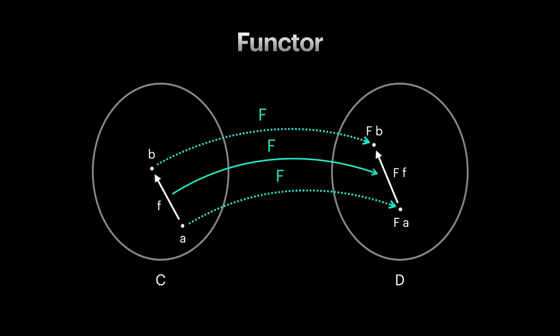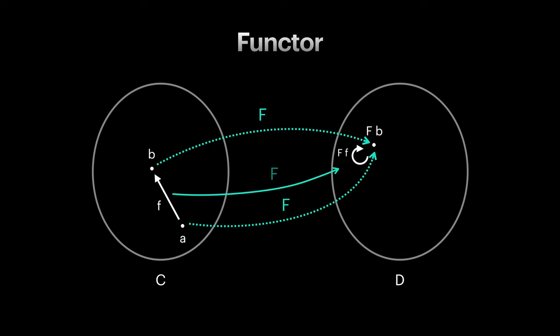By the way, I didn't say that objects should be mapped to distinct objects in the target category. They can be mapped and collapsed to the same object. Same thing for arrows. The important thing is, if two objects are connected, they should stay connected.